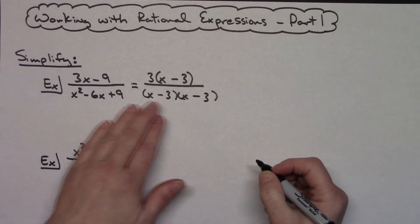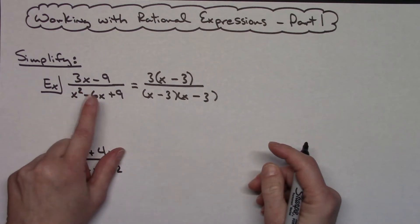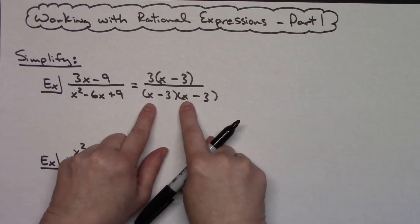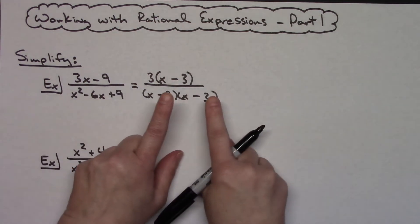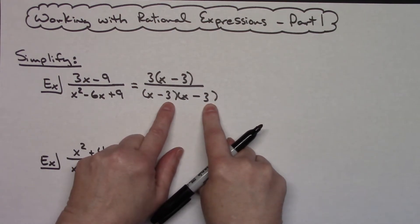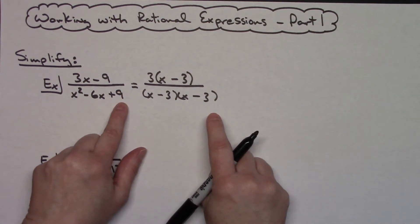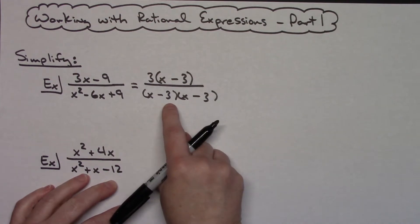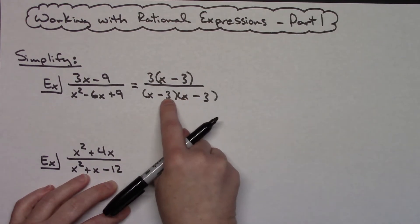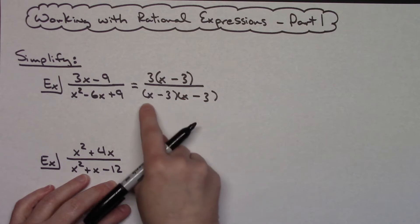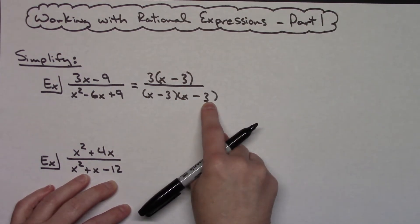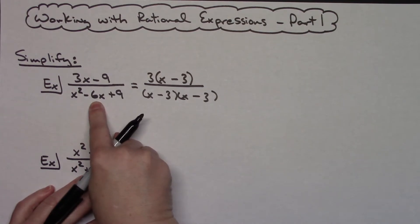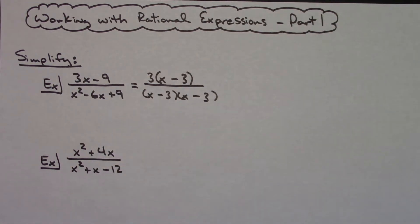I want to double-check by FOILing it out. Multiplying first terms, x times x gives me x². Negative 3 times negative 3 gives me positive 9. For the middle terms, I have negative 3x and negative 3x; adding those gives negative 6x. So I did factor it correctly.